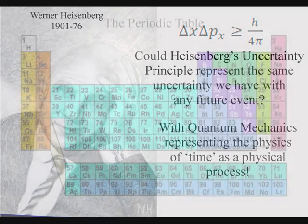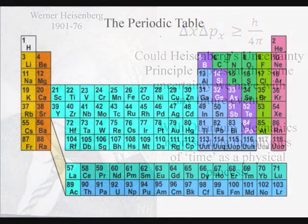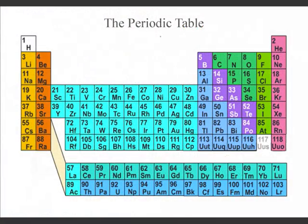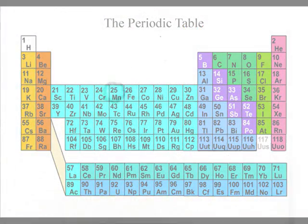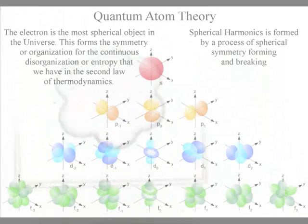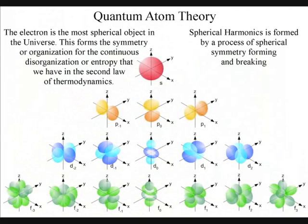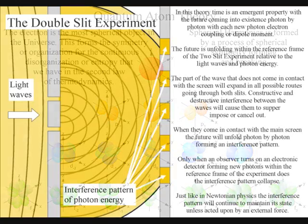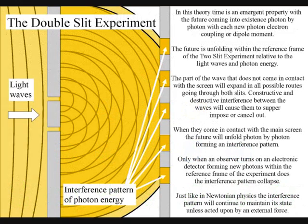It makes no difference what form or structure the atoms are in. The atoms can be in the form of the two-slit experiment, with the future unfolding photon by photon within the reference frame and relative to the structure of the experiment.